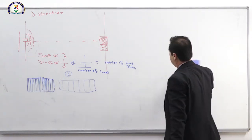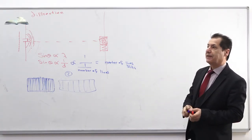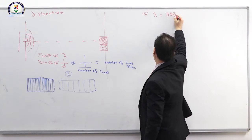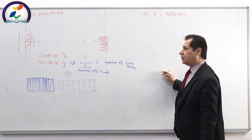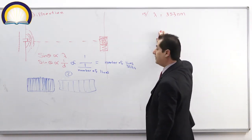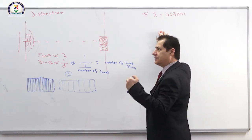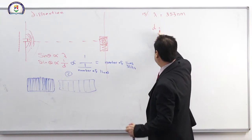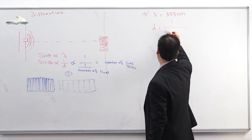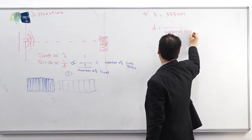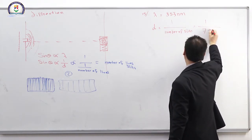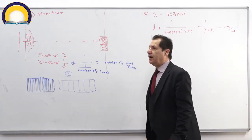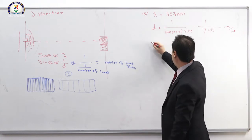Question number fifteen: light with wavelength λ = 353 nm is passed through a diffraction grating with 795 slits per centimeter. Find the angle at which the second-order maximum (m = 2) is observed. First, find D: D = 1/795 centimeters per line. Use d·sinθ = mλ for bright fringes.